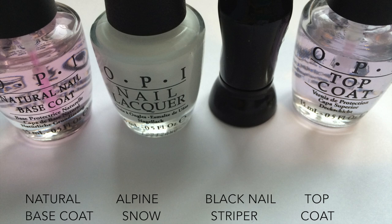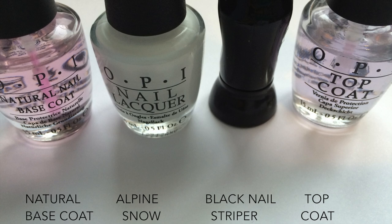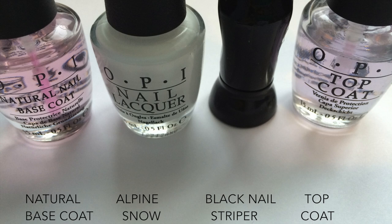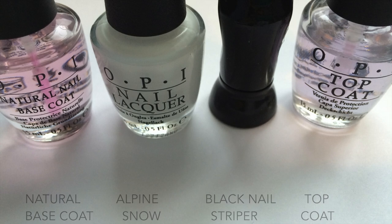From left to right, I will be using OPI's natural base coat, OPI's alkaline snow, a black nail striper, and if you don't have one, a paintbrush would also work, and OPI's top coat.